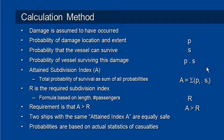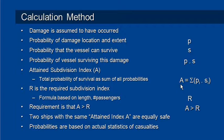So the probability that the vessel can survive that particular damage is P times S. If we look at a number of different damage scenarios we can sum them all together — we sum a combination of the probabilities of damage and the probabilities of survival. We add all those together and get a total probability of survival. This is called the attained subdivision index and is commonly labeled as A. We compare this to a required subdivision index R, which is computed in the code from a formula based on the length of the vessel and, for passenger vessels, the number of passengers on board.